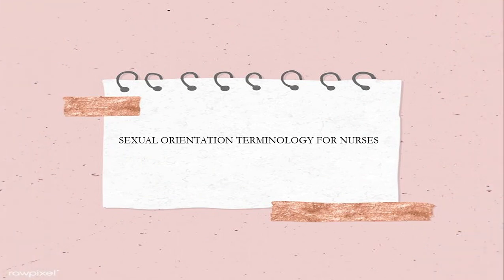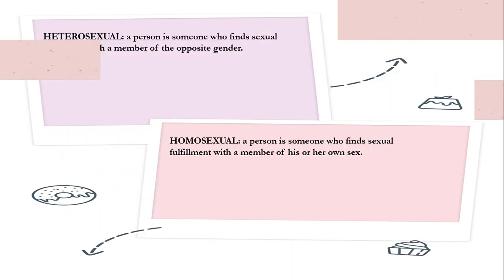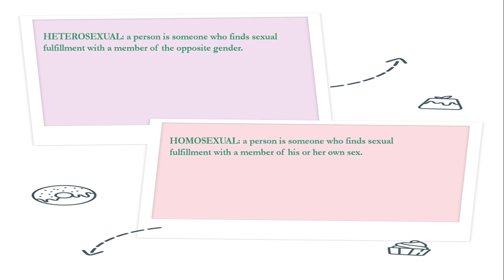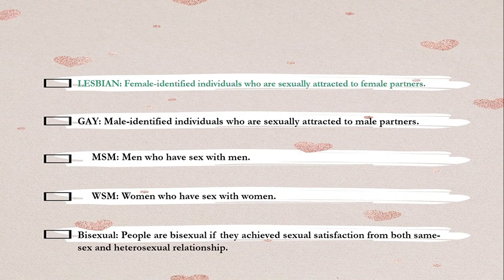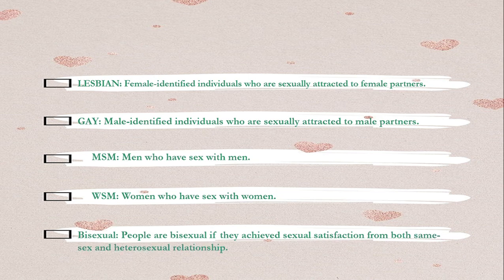Sexual orientation terminology for nurses: Heterosexual — a person who finds sexual fulfillment with a member of a different gender. Homosexual — a person who finds sexual fulfillment with a member of his or her own sex. Lesbian — female-identified individuals who are sexually attracted to female partners. Gay — male-identified individuals who are sexually attracted to male partners. MSM — men who have sex with men. WSW — women who have sex with women. Bisexual — people who achieve sexual satisfaction from both same-sex and heterosexual relationships.